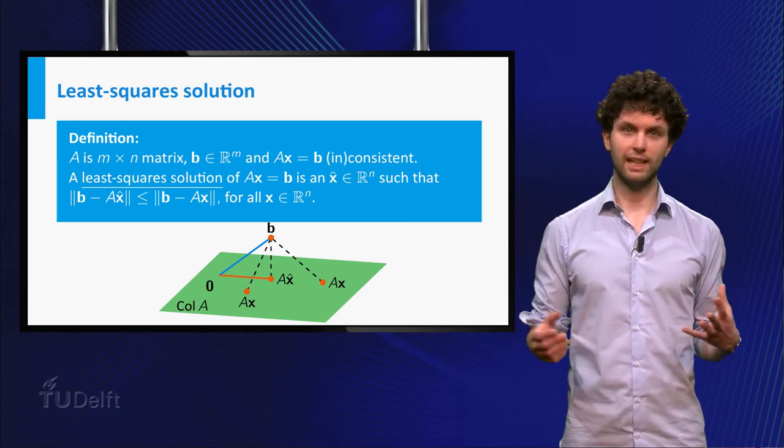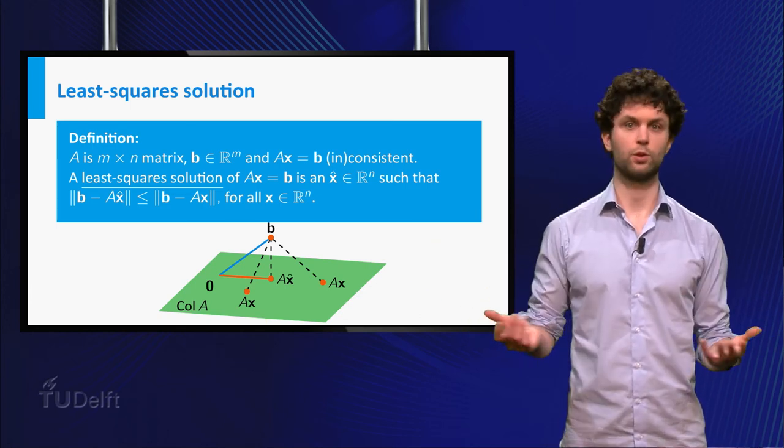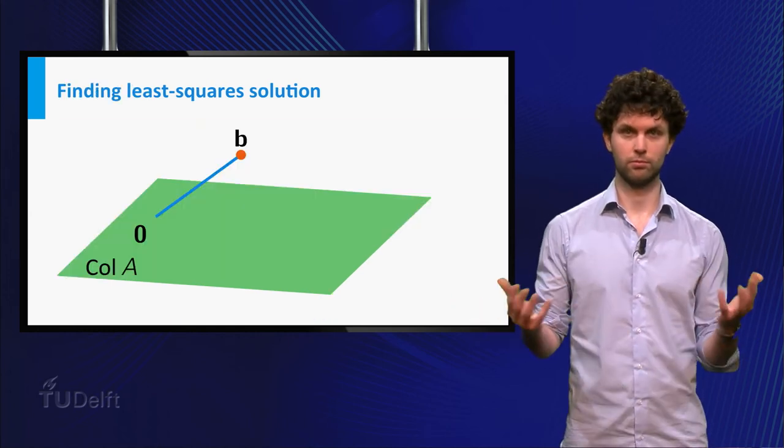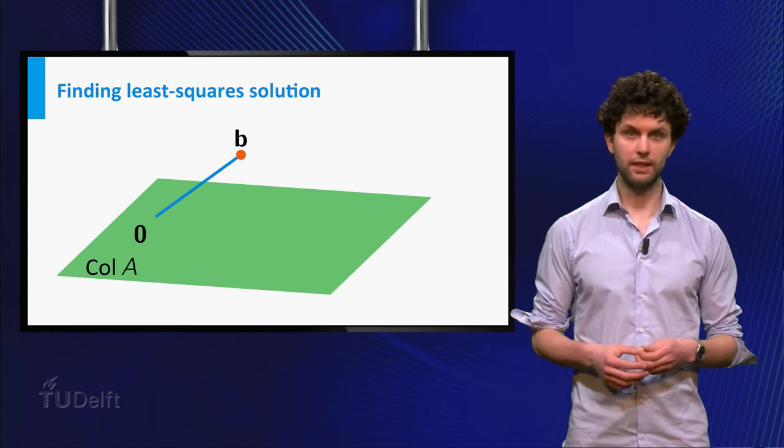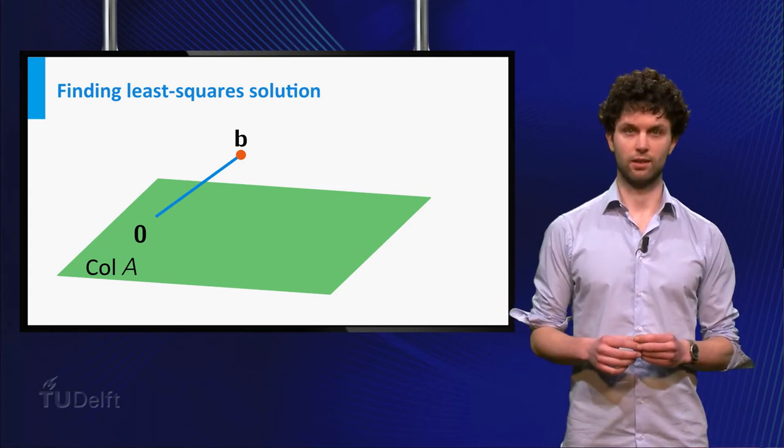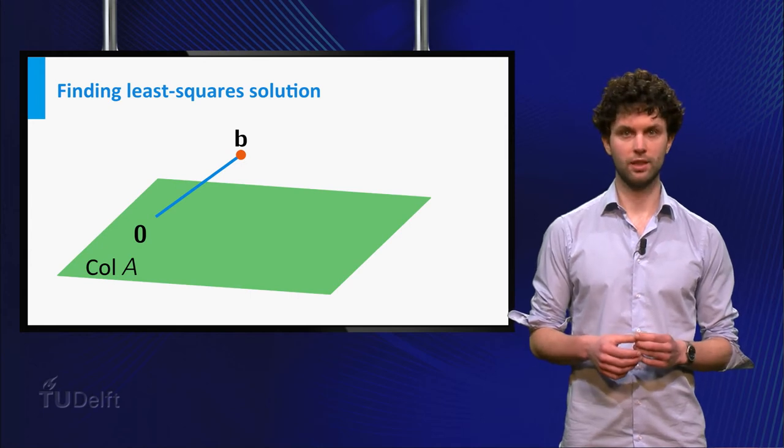Well, the idea behind the method of least-squares is connected to the theory of orthogonal projections. Recall that the system Ax is b is consistent if and only if b lies in the column space of A.